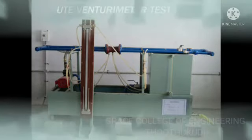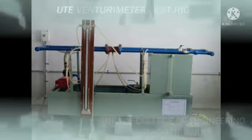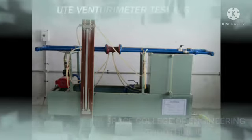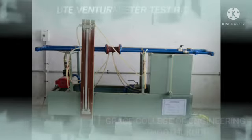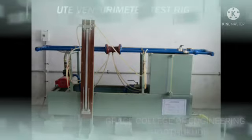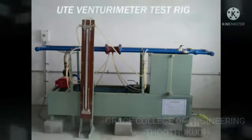This apparatus shows a Venturimeter connected to a pipe. Two sections, one at the throat and another at the converging part of the Venturimeter, are connected to a U-tube manometer to find out the pressure difference between these two sections.